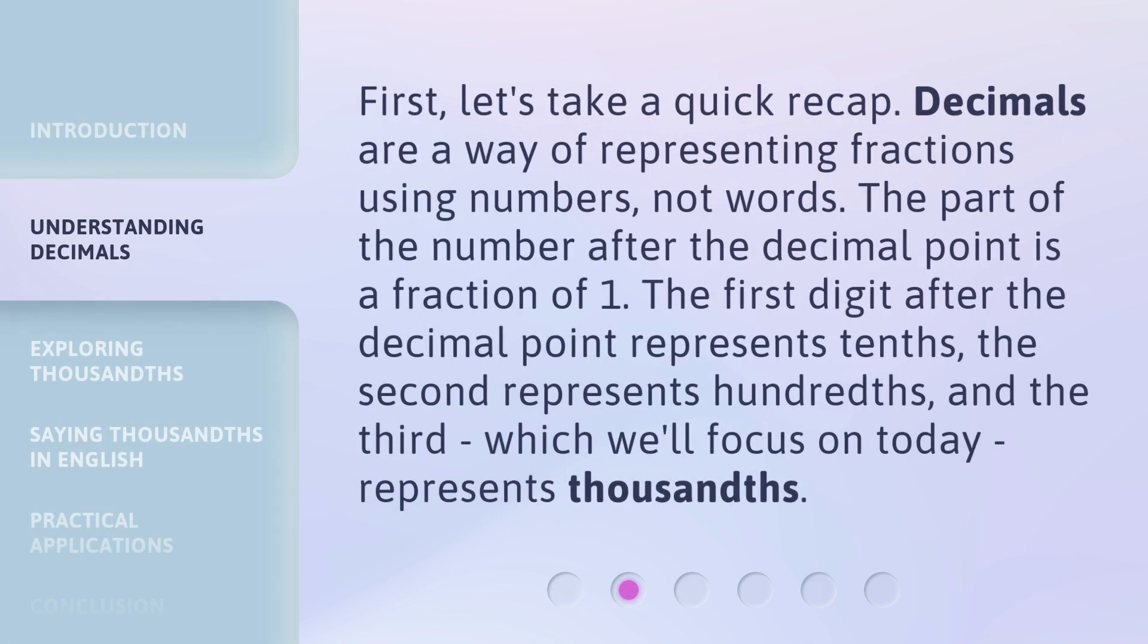First, let's take a quick recap. Decimals are a way of representing fractions using numbers, not words. The part of the number after the decimal point is a fraction of one. The first digit after the decimal point represents tenths. The second represents hundredths. And the third, which we'll focus on today, represents thousandths.